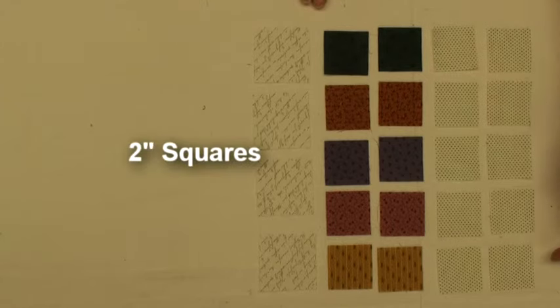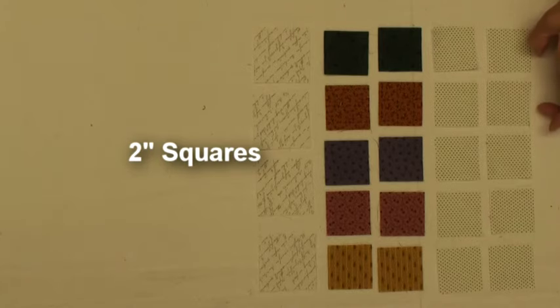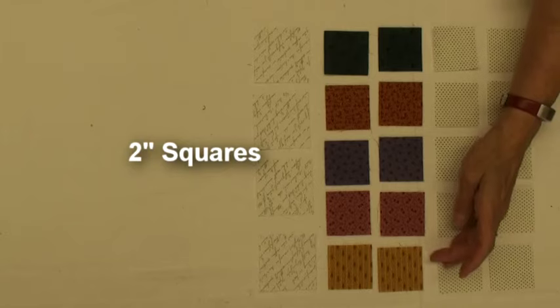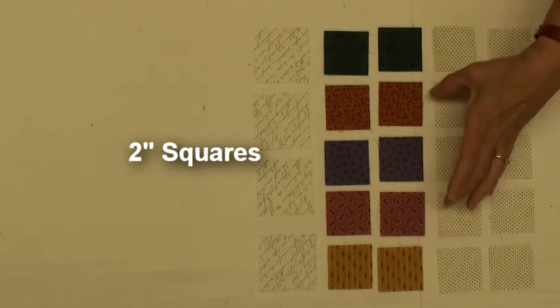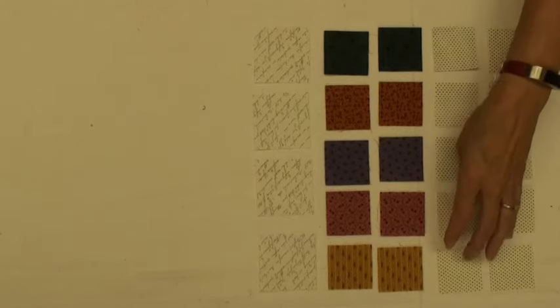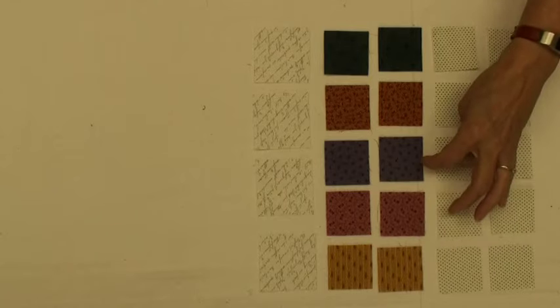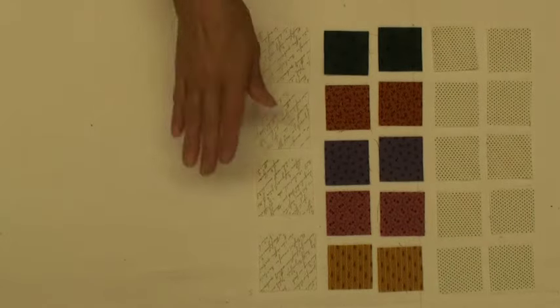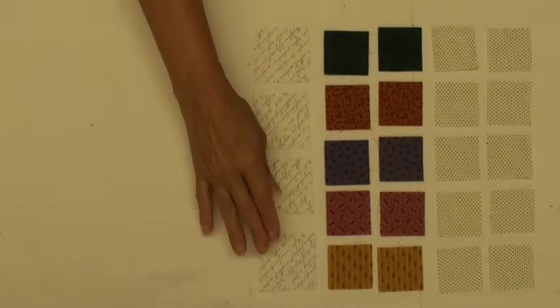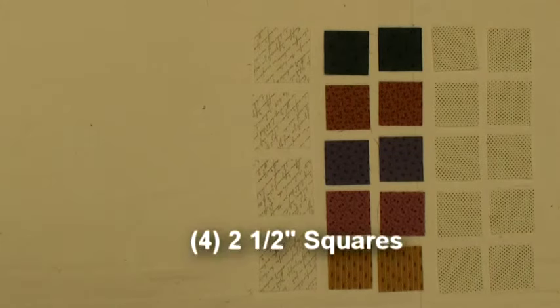So we're going to start off and we are going to cut ten two inch squares from your cream with black polka dot. From your five colors, your gold, pink, purple, orange, and teal, you're going to cut two two inch squares of each of those colors. And we're not going to worry about these right now, but you will need four two and a half inch squares when you put this little block all together.